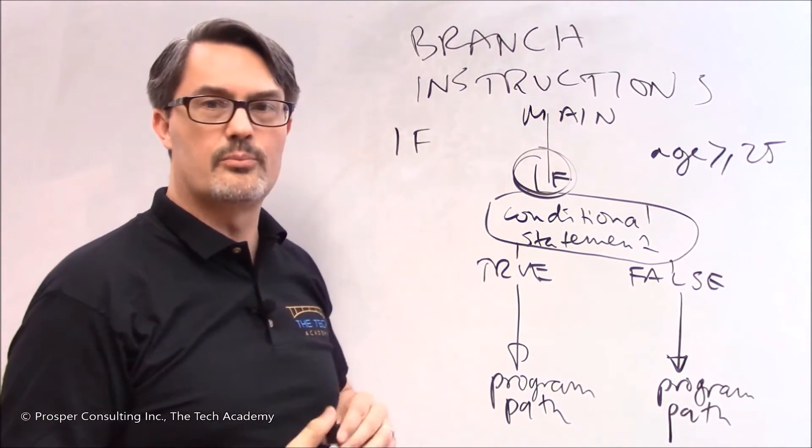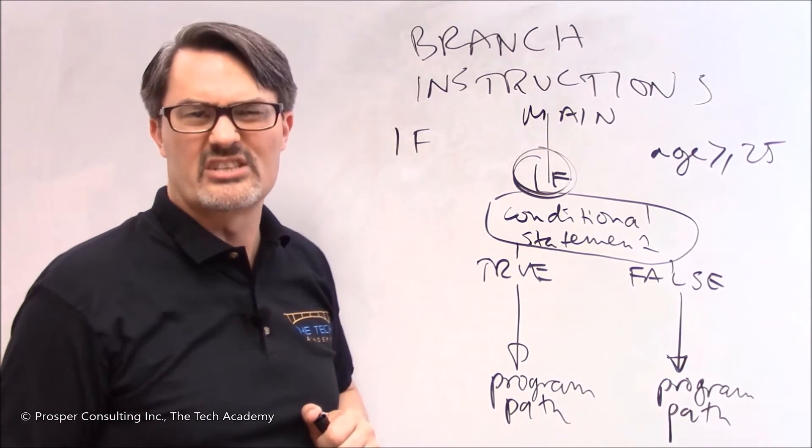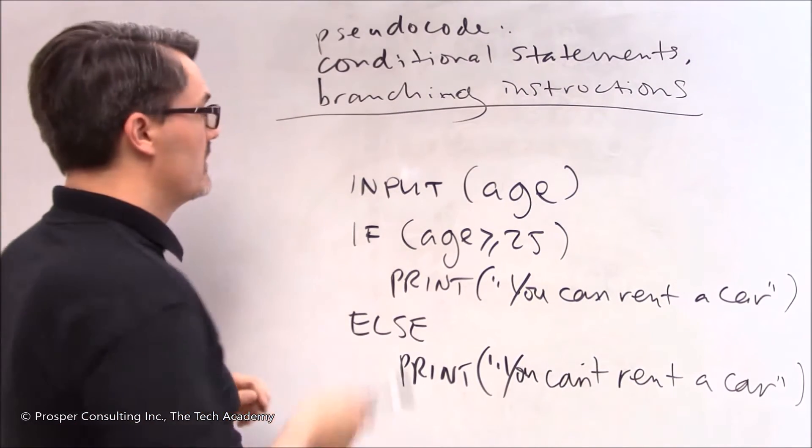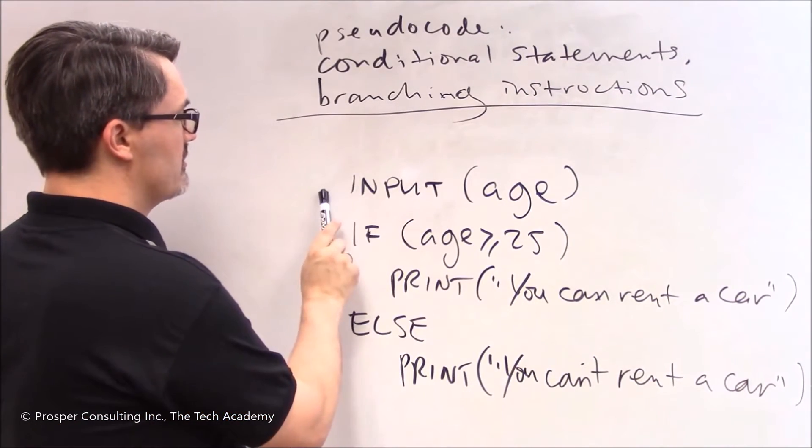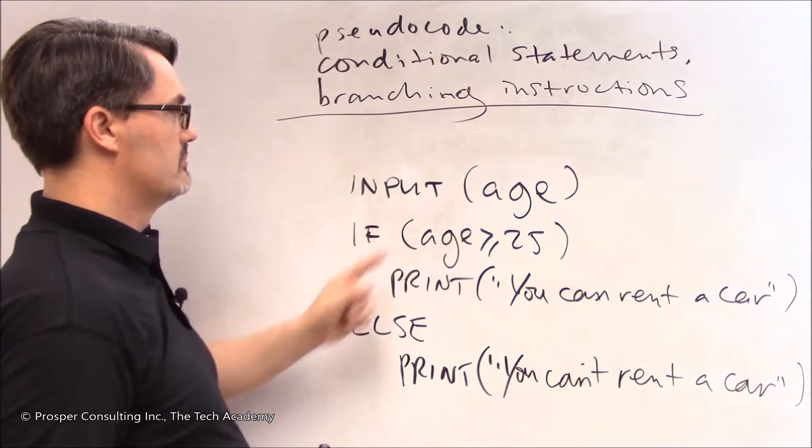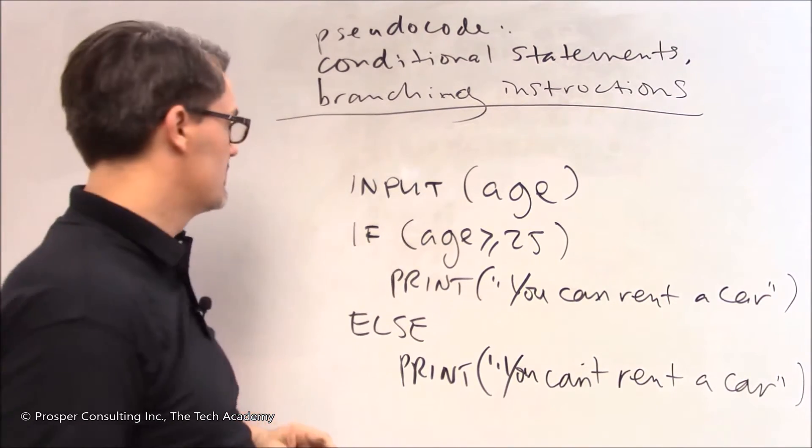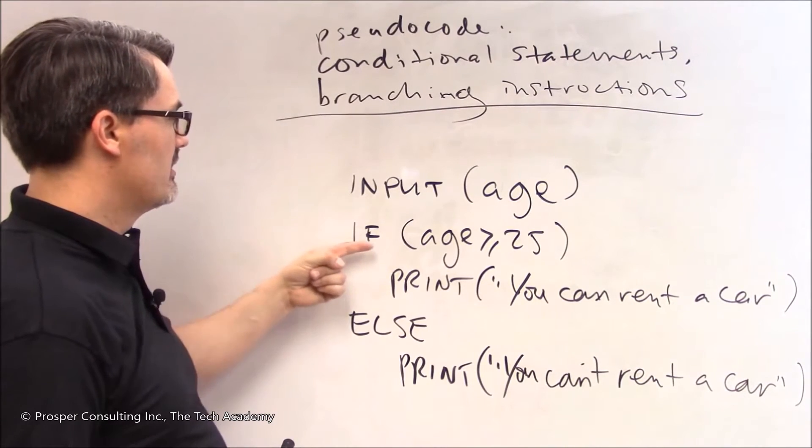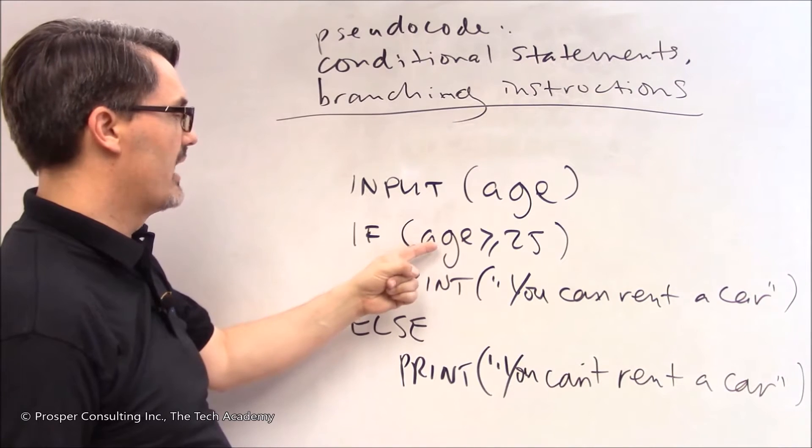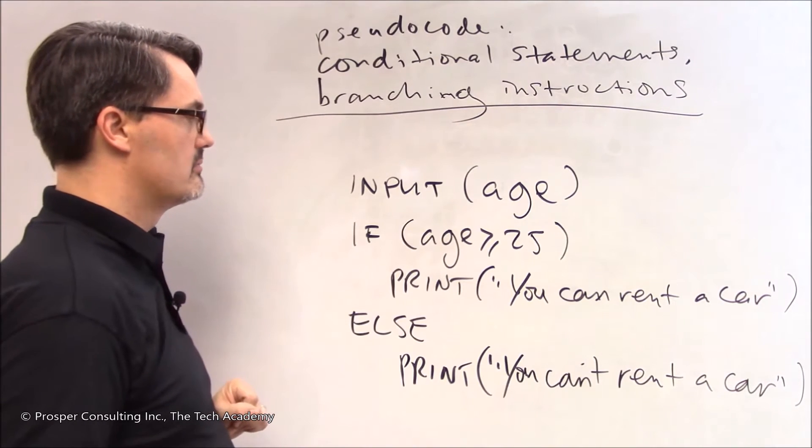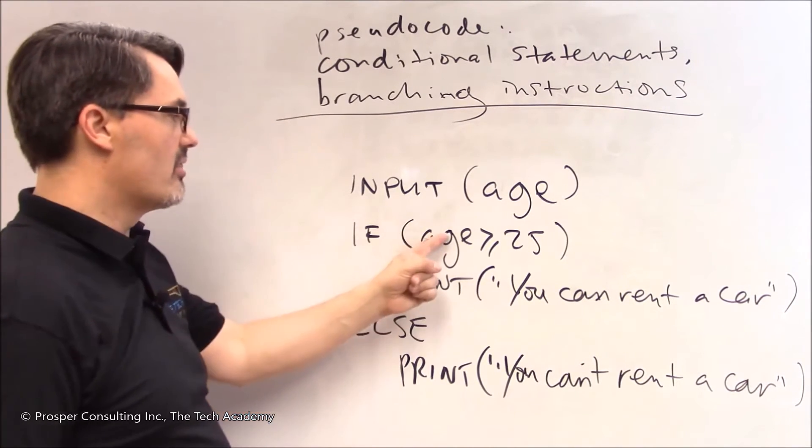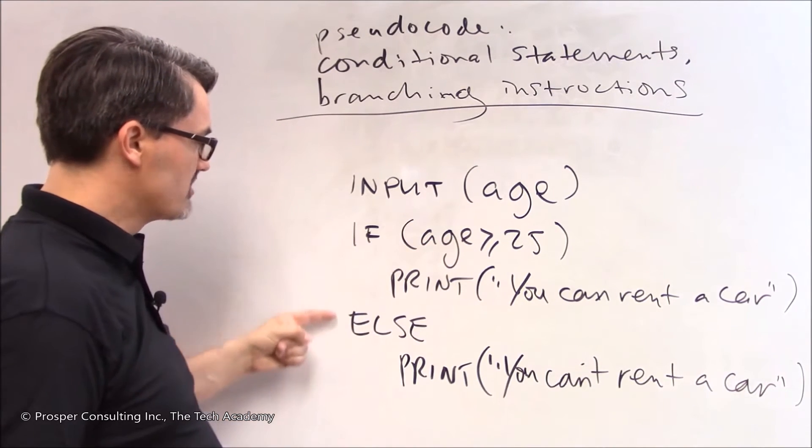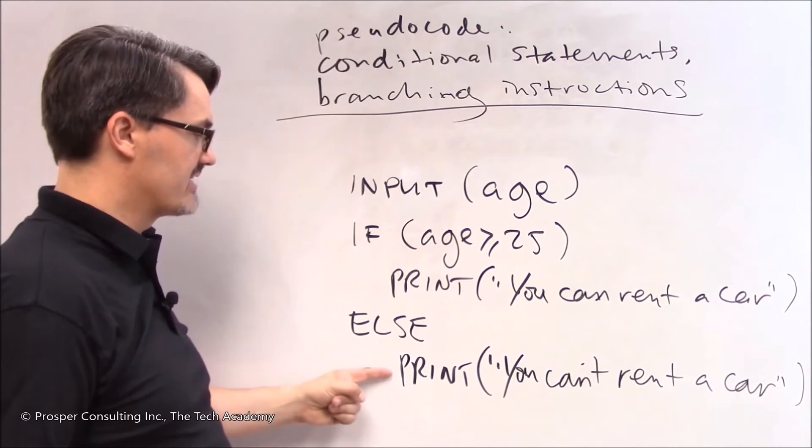So let's put that down in pseudocode. Essentially fake code close enough for understanding. Remember instructions are executed in order. So here first the computer will ask for input and the person will put in their age. Next the computer will analyze this statement. It analyzes the condition age greater than or equal to 25. And then based on that being true or false either executes the next statement or jumps over here to an else and executes that statement.